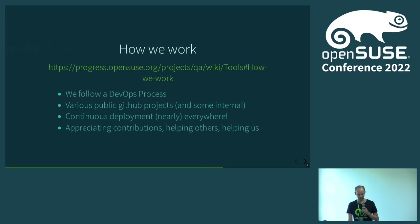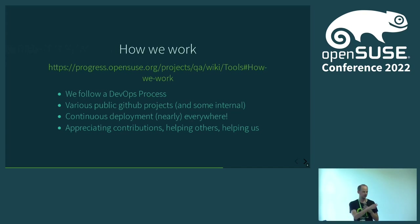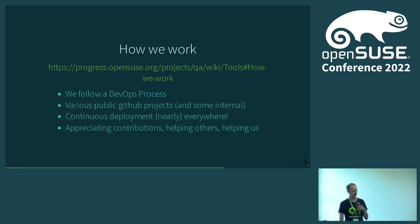We use mostly continuous deployment. For example, OpenQA.opensuse.org is used as a verification platform for us. We deploy there as soon as a pull request is merged for the code we have — then a package is built, and as soon as the package is built and published on download.opensuse.org it will be rolled out to OpenQA.opensuse.org and later on to the SUSE internal instance. The same applies for other scripting and tooling around that.